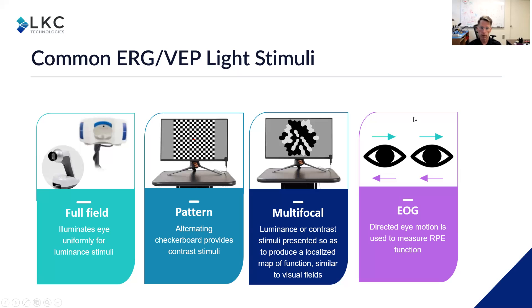We also have an EOG, an electrooculogram, where directed eye motion can be measured along with a visual stimulus in order to measure the retinal pigment epithelium, RPE, function.